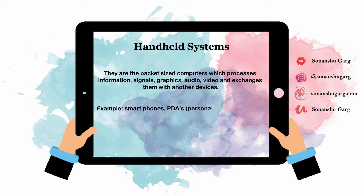The best example I could give is a smartphone. We all possess one or another phone, and most of them are smartphones. They are small in size, and they help us take videos, audios, and process information and signals, and also share those with other devices, with friends, family, and other people. So they are handheld systems.